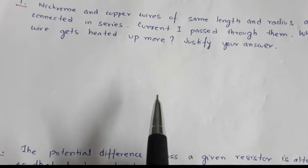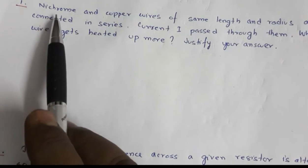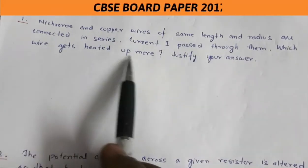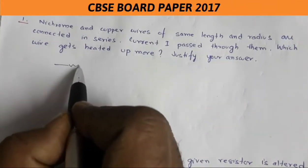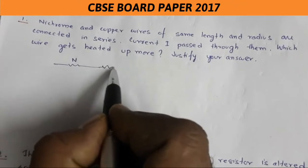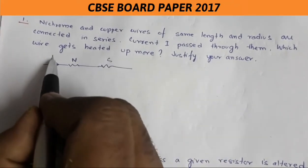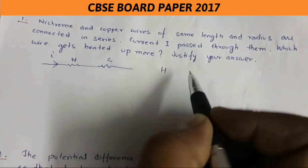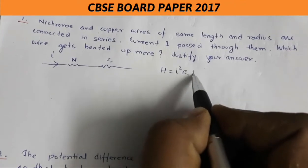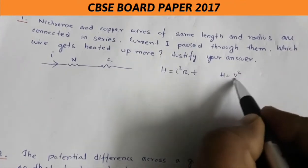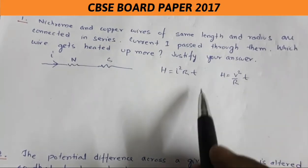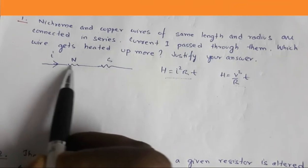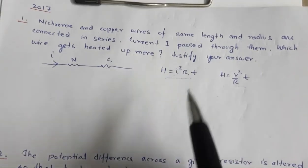In 2017, a question: nichrome and copper wires of same length and radius are connected in series. Current I is passed through them. Which wire gets heated up more? Heat generated in a wire is given by H = I²RT. I will use this relation because nichrome and copper are connected in series, so they carry the same current — this term is constant.